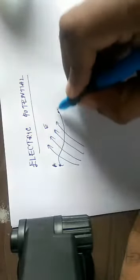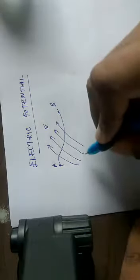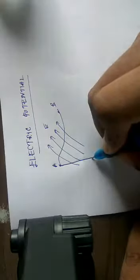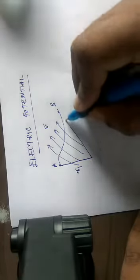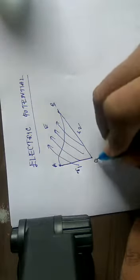Now we are going to see about the electric potential in an electric field. Consider this is an electric field. I want to move a charge from point A to B. From the origin to point A the distance is r1, and similarly from the origin to point B the distance is r2.